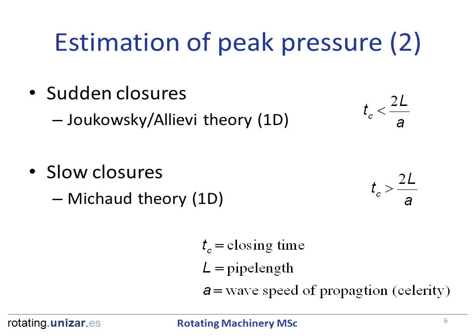To estimate the peak pressure, we have to distinguish two cases depending on whether the change of velocity inside the pipe is sudden or slow. Sudden closures are those in which the closing time is smaller than the wave's propagation and return time. In this case, the peak pressure is estimated according to the Joukowsky-Alievi theory. If that condition is not met, the closure is slow and the peak pressure can be estimated according to Michaud's theory.